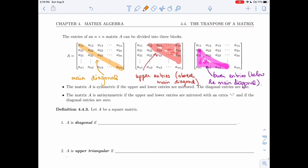So something is symmetric if the upper and lower entries are mirrored, the diagonal entries are free.